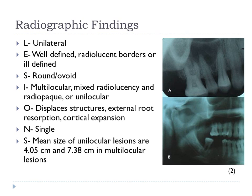Picture B shows destruction of the floor of the maxillary sinus. The majority of these lesions are single, and unilocular lesions have a mean size of 4.05 cm, while multilocular lesions have a mean size of 7.38 cm.